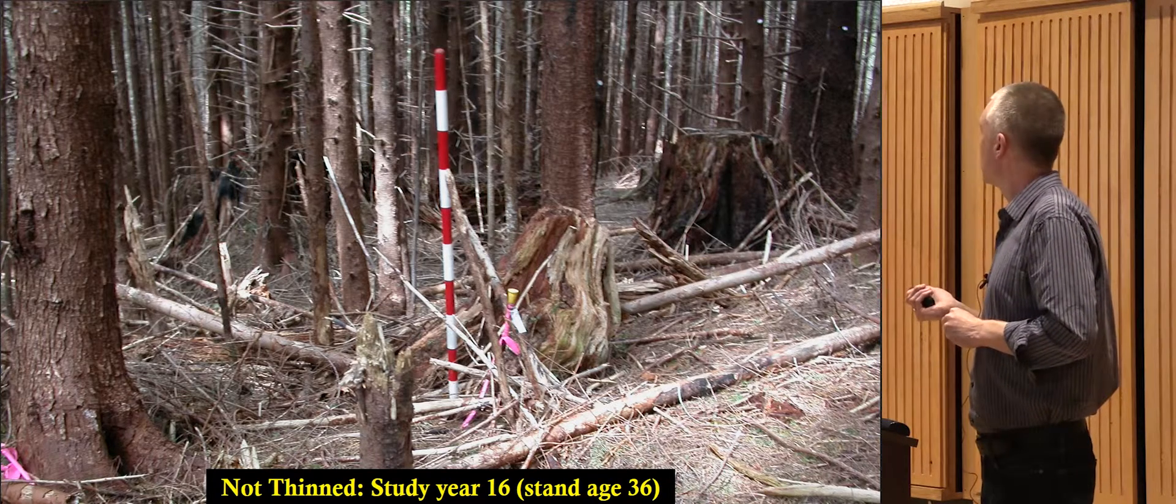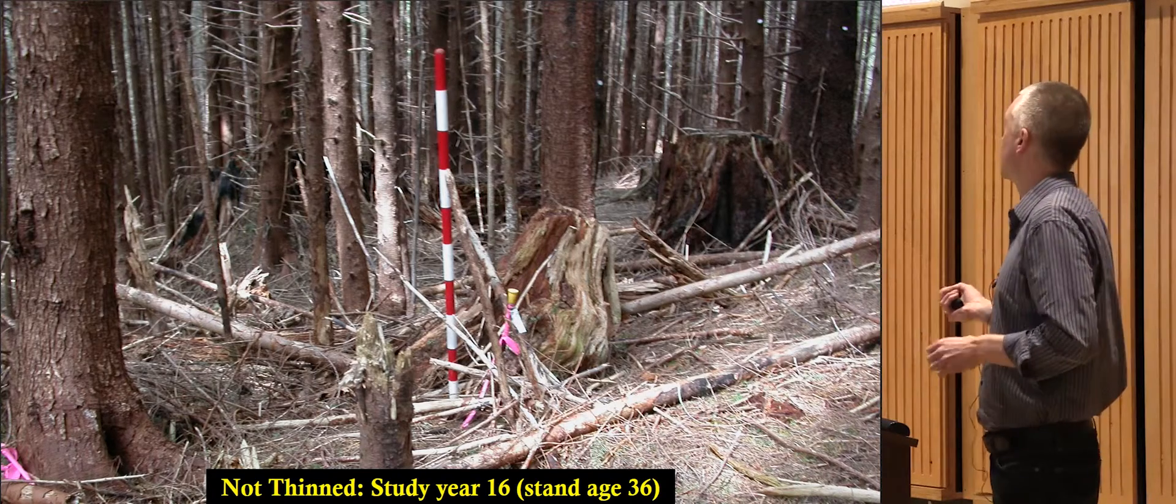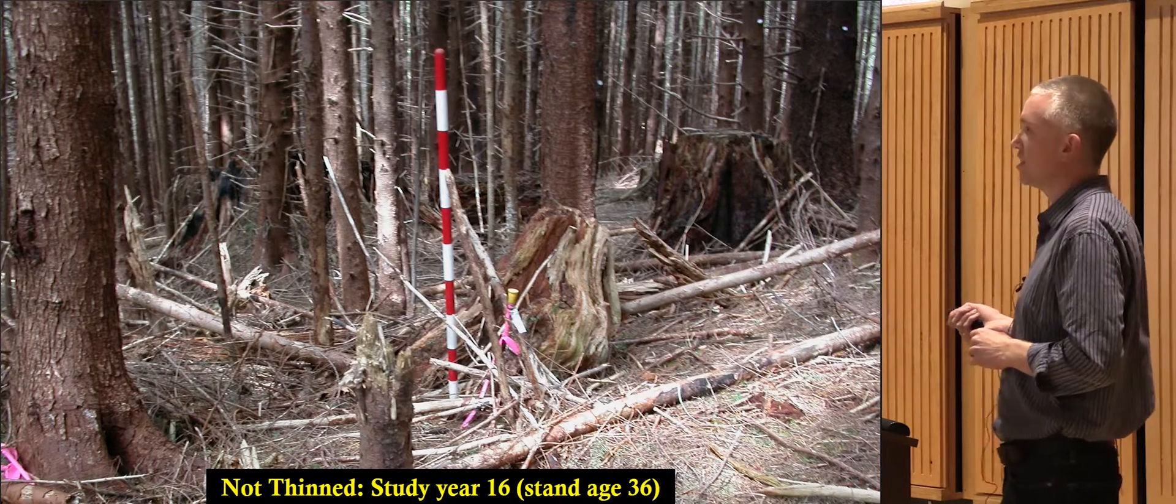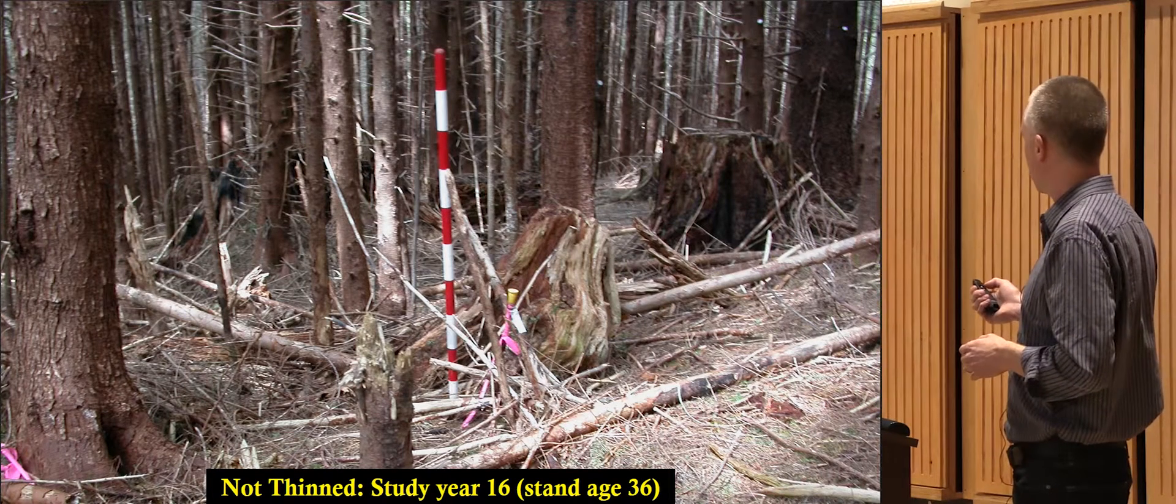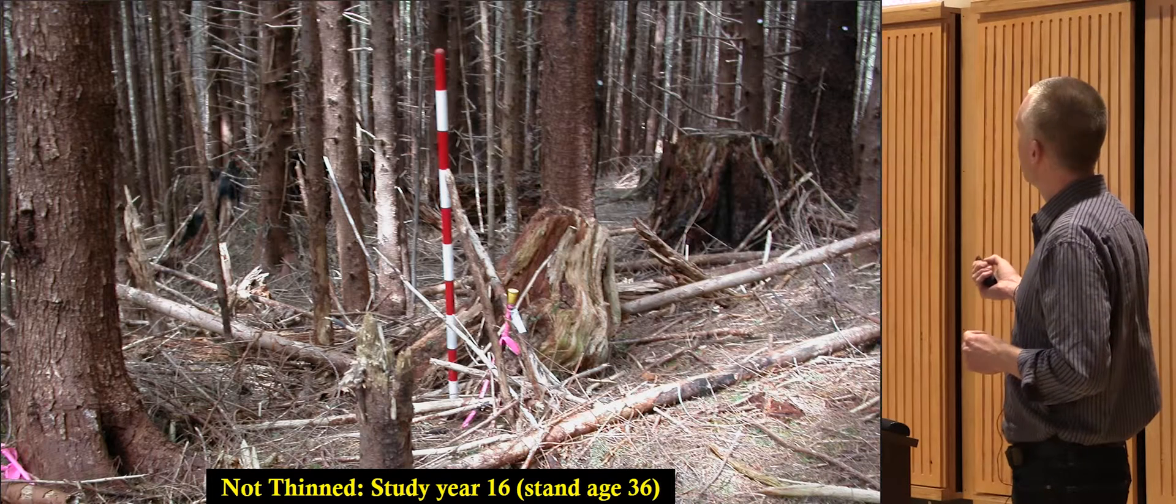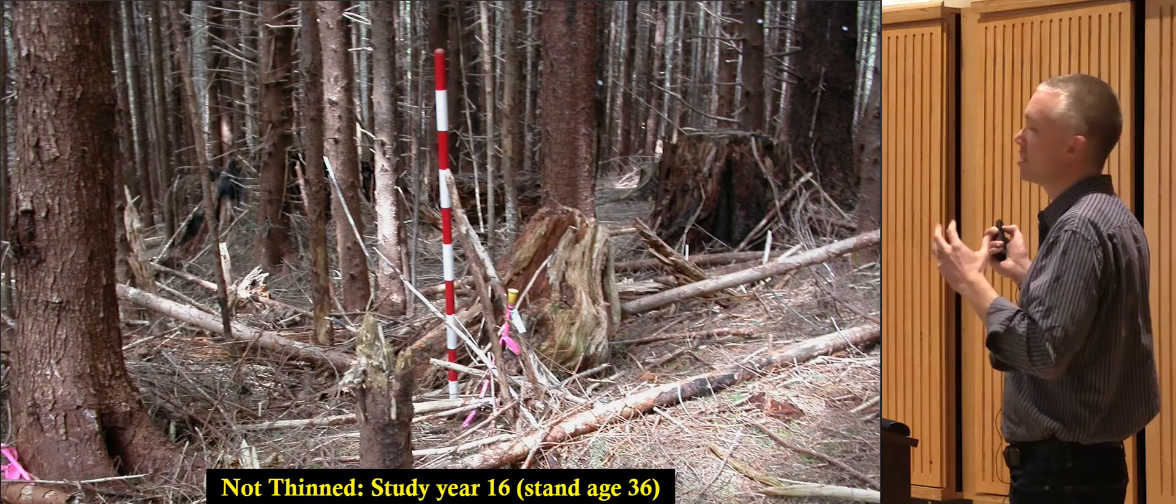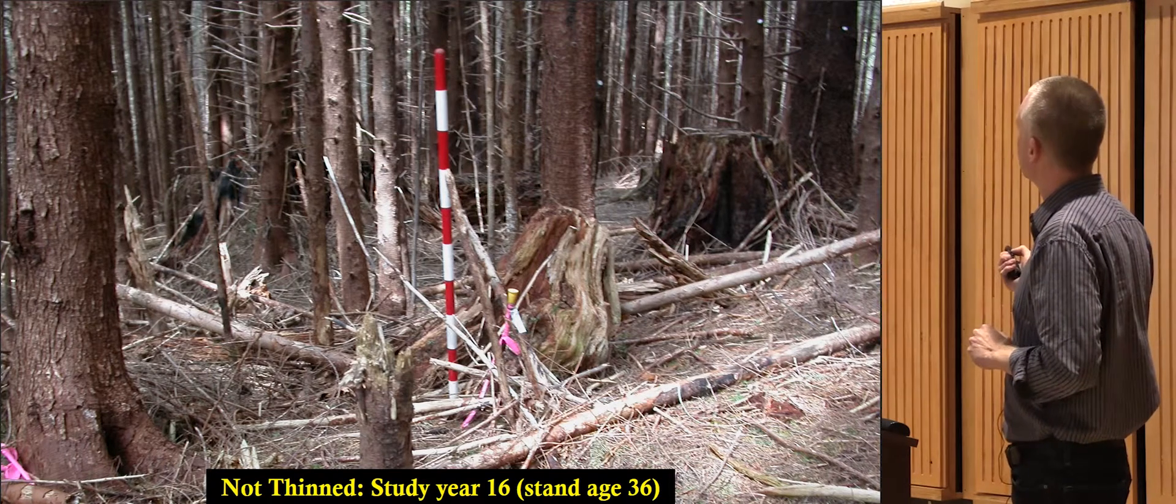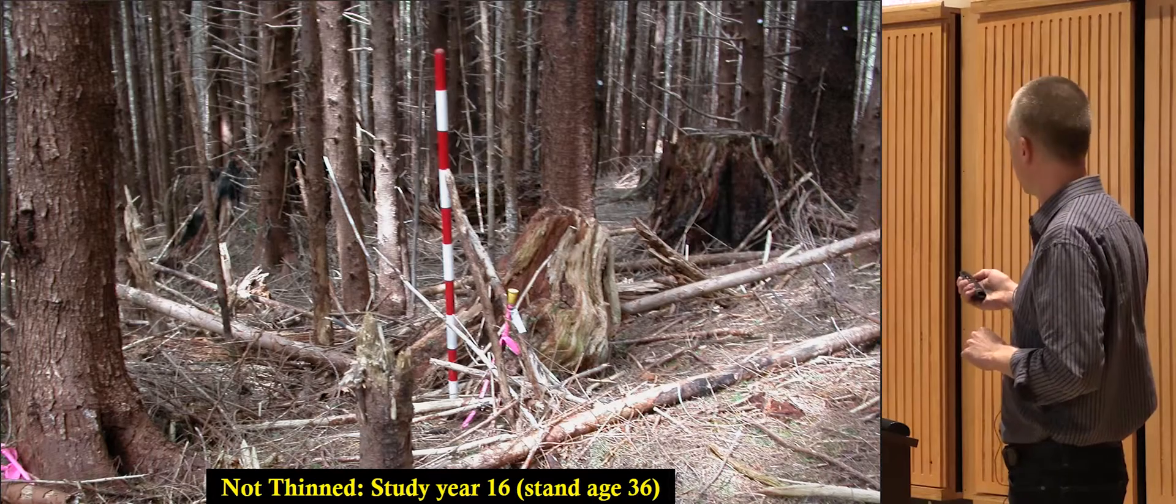One thing these photos will highlight is what's going on in the understory. The goal with enhancing habitat was to get some understory vegetation for wildlife, for forage, for browse. You can see here if you don't thin, this is in that competitive exclusion stage. All the trees are competing hard for sunlight. There's almost no sunlight reaching the forest floor directly, so you have almost no vegetation there.